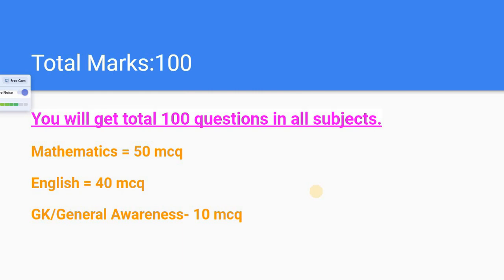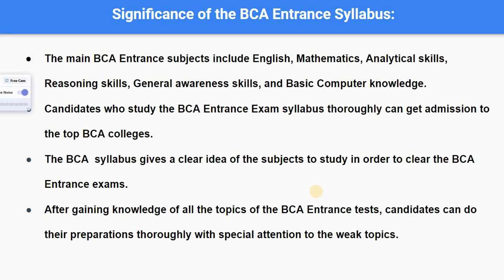In 100 marks, Mathematics is 50, English is 40, and GK is 10. These MCQs are objective questions — Multiple Choice Questions — like options A, B, C, D.